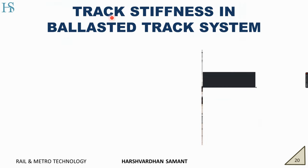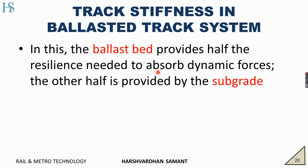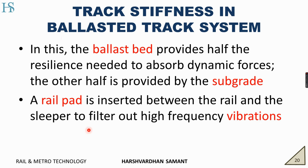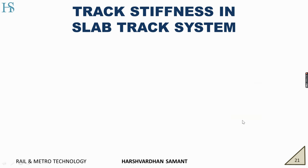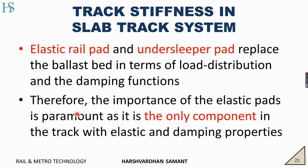Moving next to track stiffness in ballasted track system. The ballast bed provides half the resilience needed to absorb dynamic forces, and the other half is provided by the subgrade. So basically the ballast and the subgrade together provide resilience to the ballasted track. Rail pads are also used between rails and sleepers to filter out high-frequency vibrations. But in a slab track system, we don't have ballast, so elastic rail pads and under-sleeper pads replace the ballast in terms of load distribution and damping function. Therefore, these elastic rail pads are the most important component, as they are the only component in the track with elastic and damping properties.